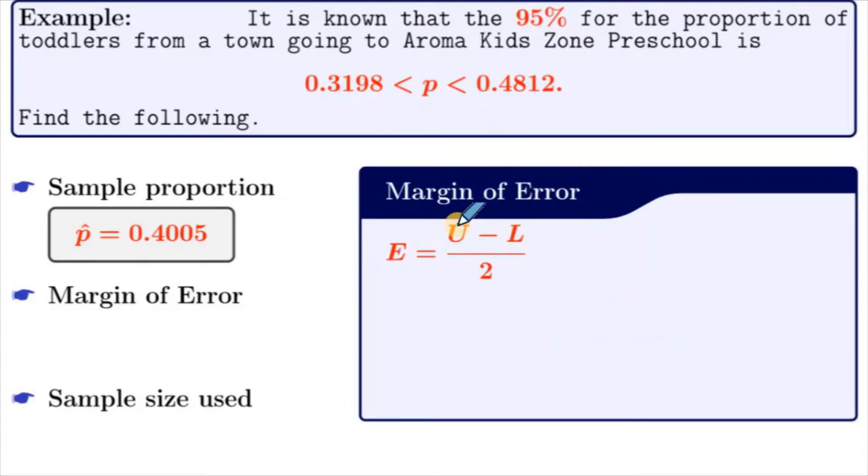Now let's find the margin of error. The formula for margin of error is upper value minus lower value divided by 2. Looking at this interval, we know this is our upper value and this is our lower value. So let's substitute the upper and lower values into our formula. We get 0.4812 minus 0.3198 divided by 2.